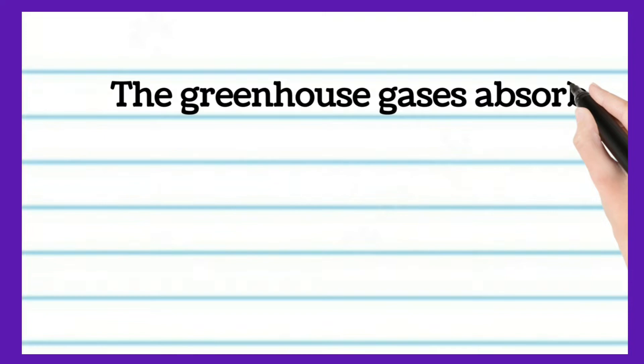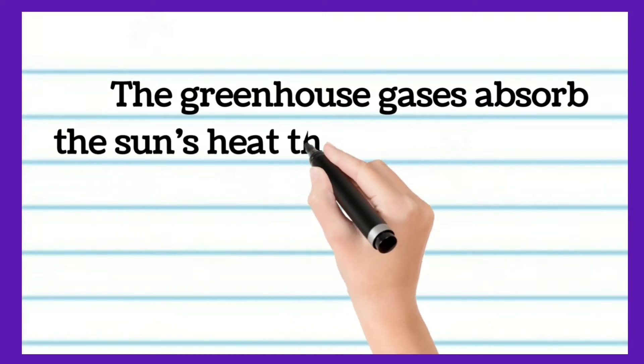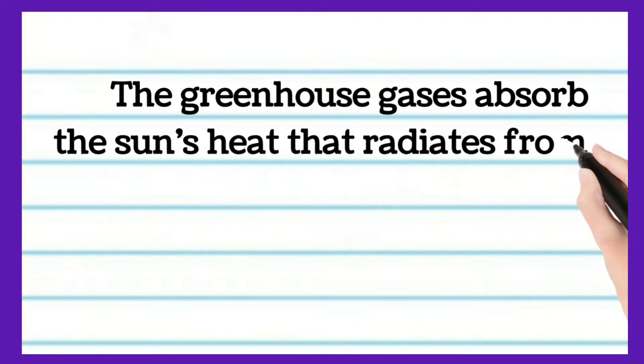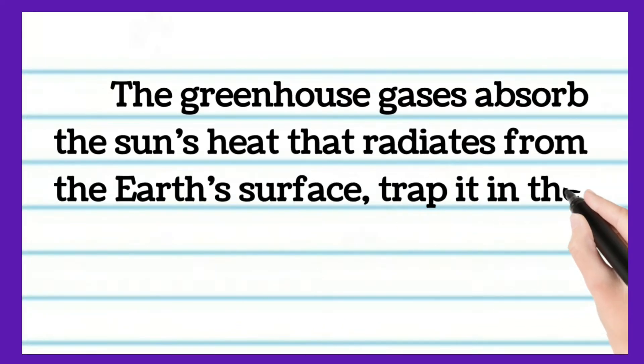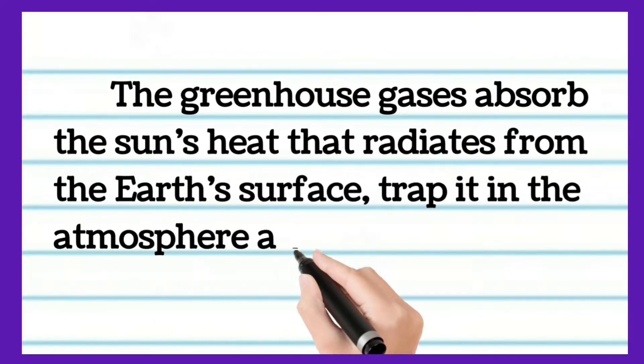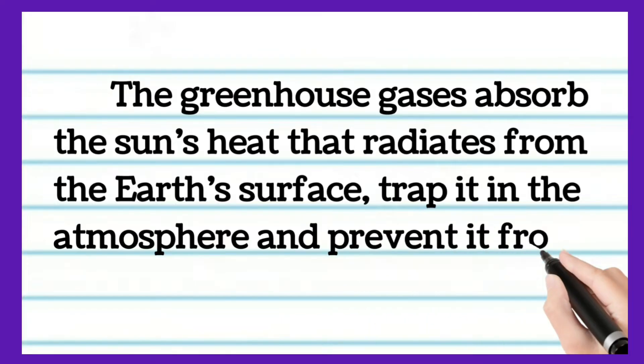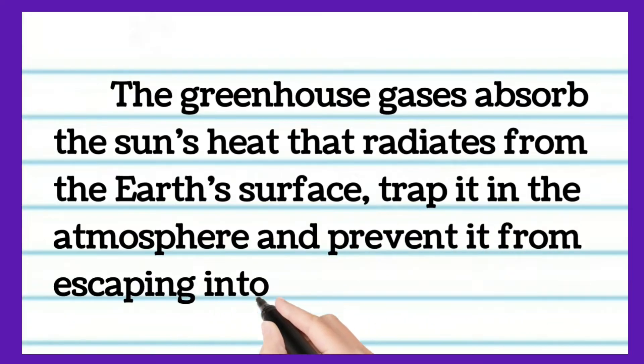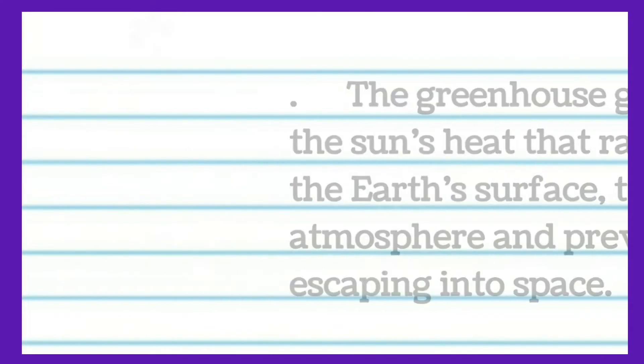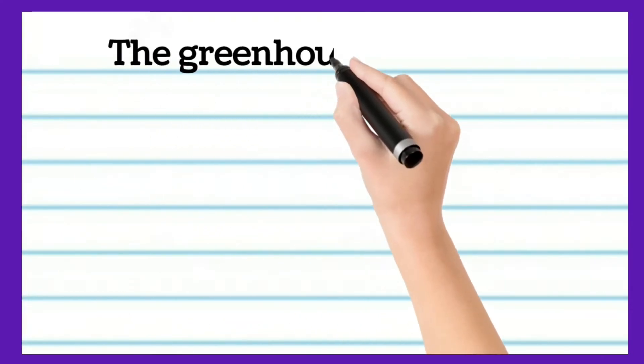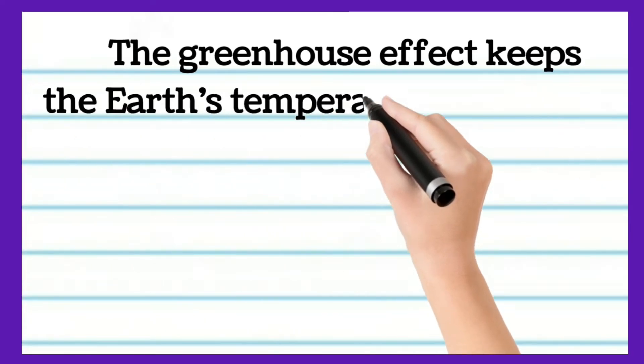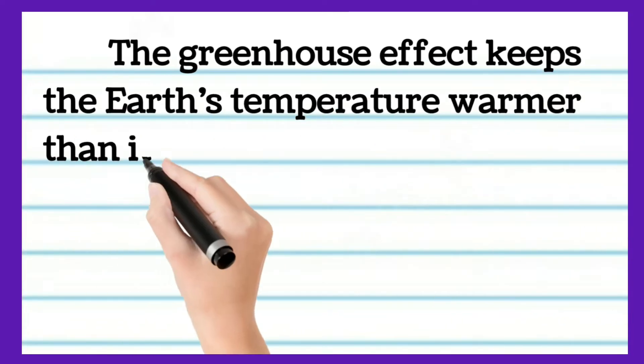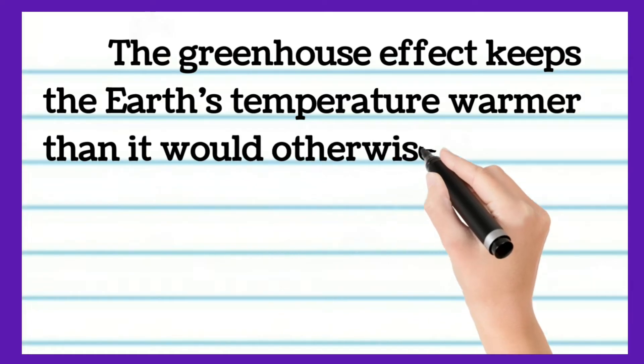The greenhouse gases absorb the sun's heat that radiates from the Earth's surface, trap it in the atmosphere and prevent it from escaping into space. The greenhouse effect keeps the Earth's temperature warmer than it would otherwise be.